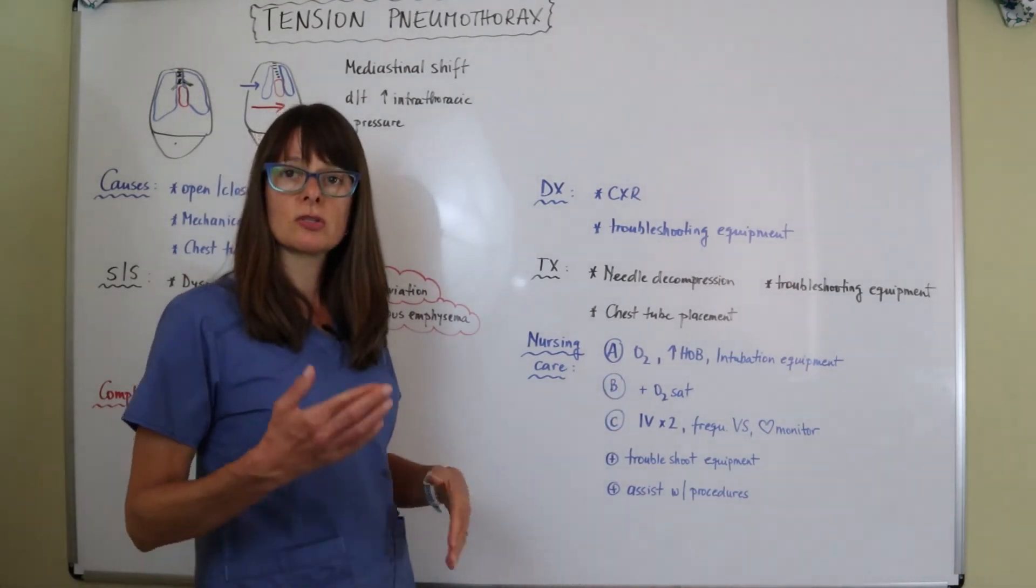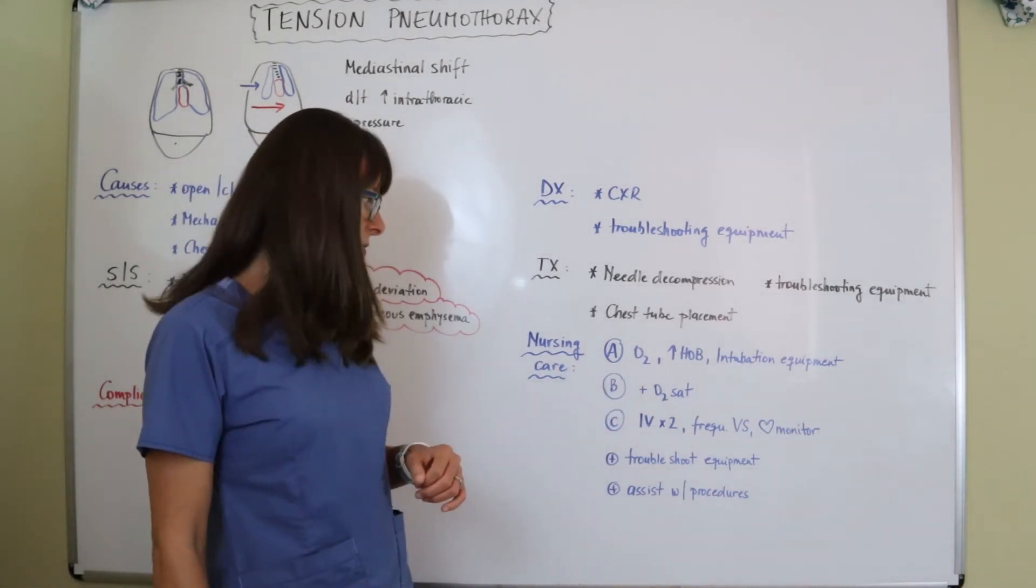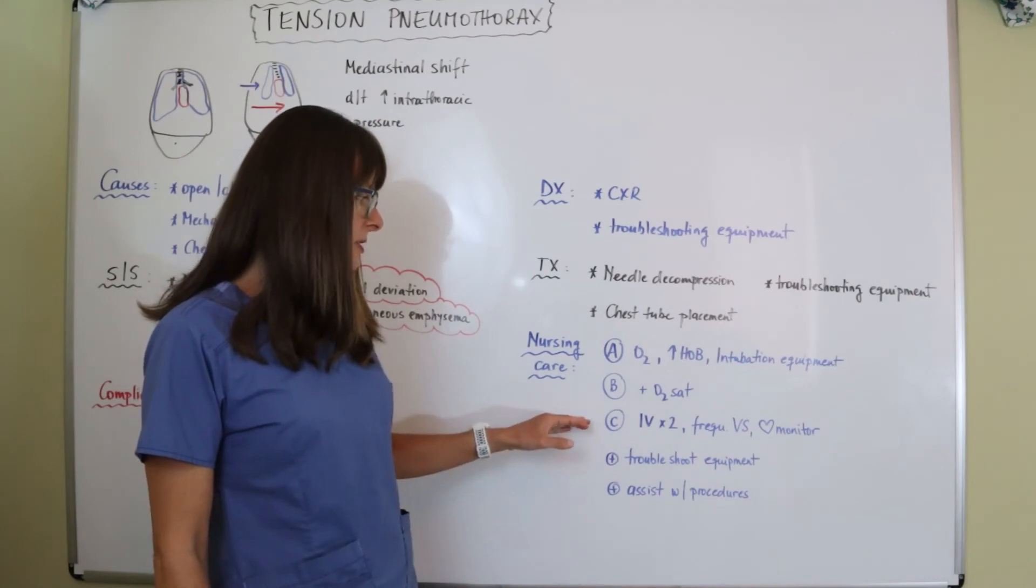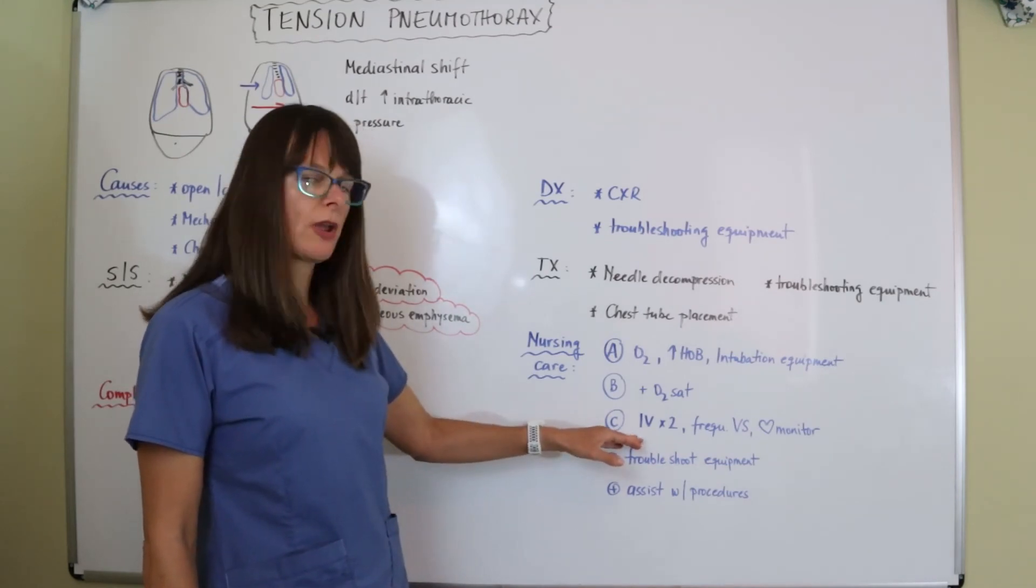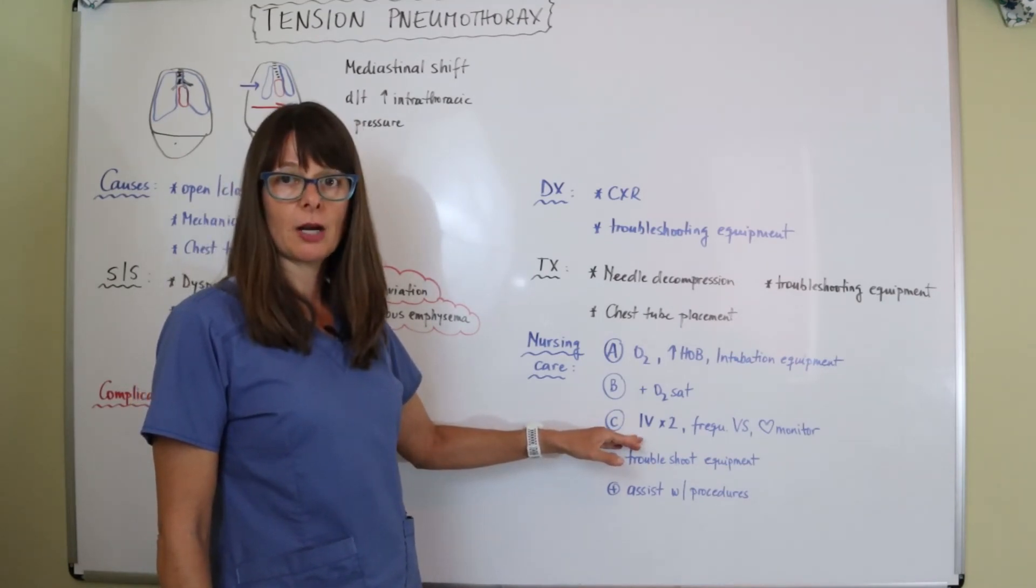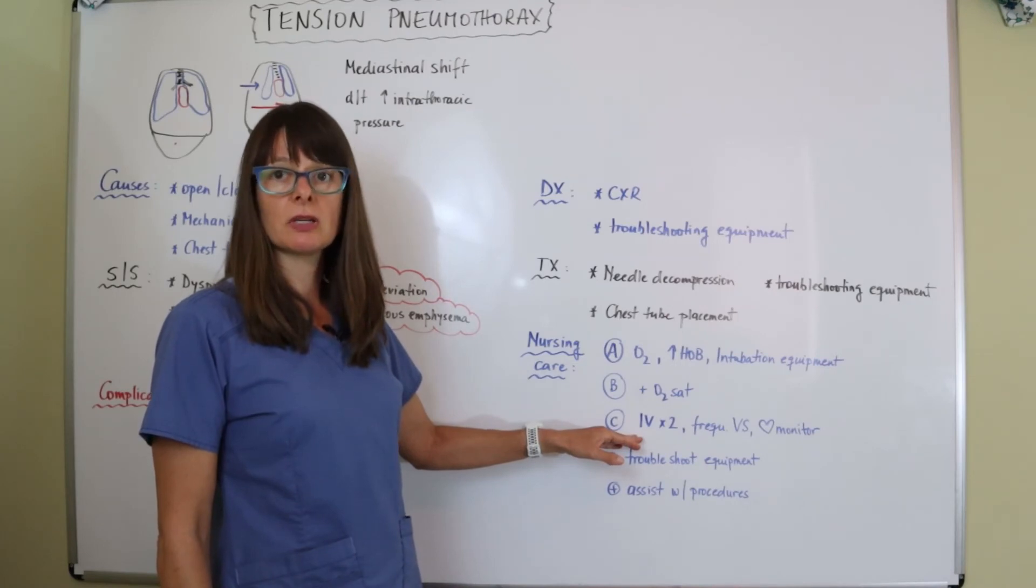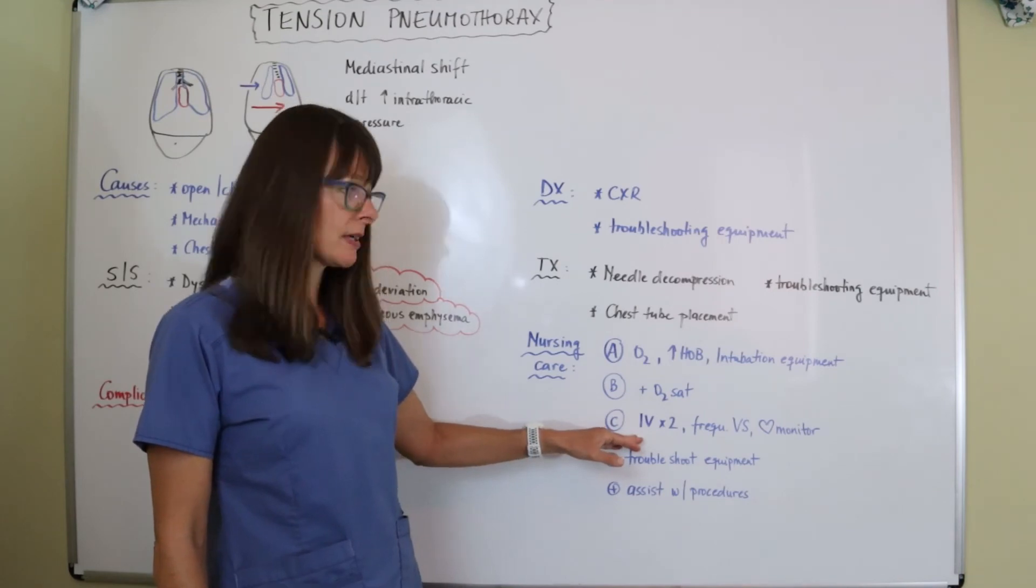For C, circulation, we want to make sure we have two IVs, large-bore IVs, in this patient because they might need fluids administered, they might need blood products if it's a hemothorax, or we might need to administer vasopressors if the patient's blood pressure gets really low and we can't resolve it quickly.